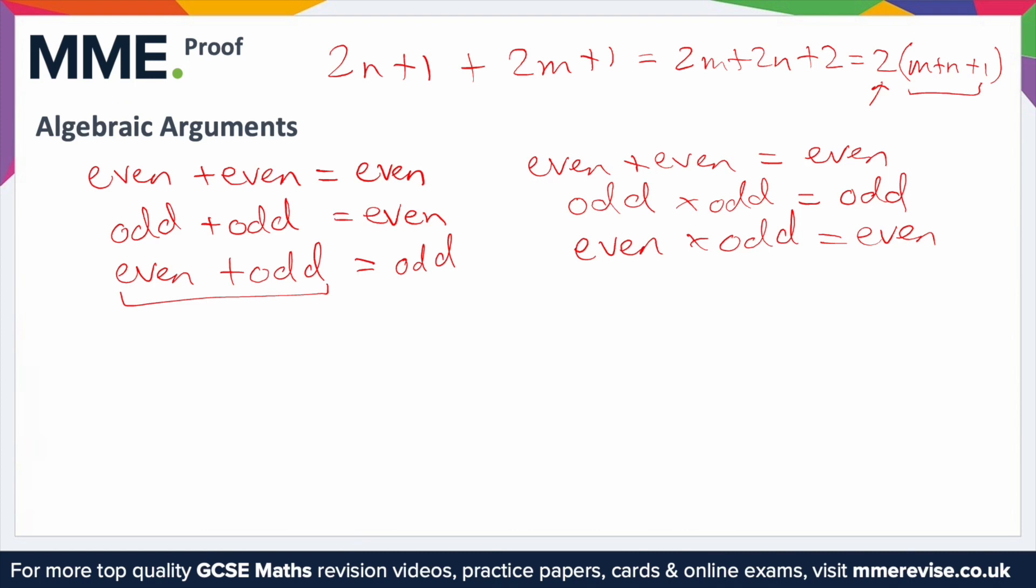We can do an example of this. If n is an odd number, show that n plus 2 times n plus 5 is even. How can we do this? I would start off by expanding out the brackets, or see if you can tackle the brackets individually.